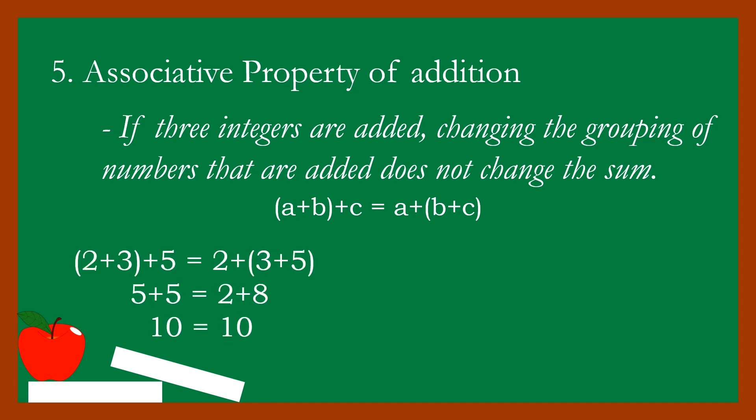For example, the sum of (two plus three) plus five is equal to two plus the sum of (three plus five). Simplifying: two plus three equals five, and five plus five equals ten. On the other side, three plus five equals eight, and two plus eight equals ten. Even with different groupings, the result is the same.